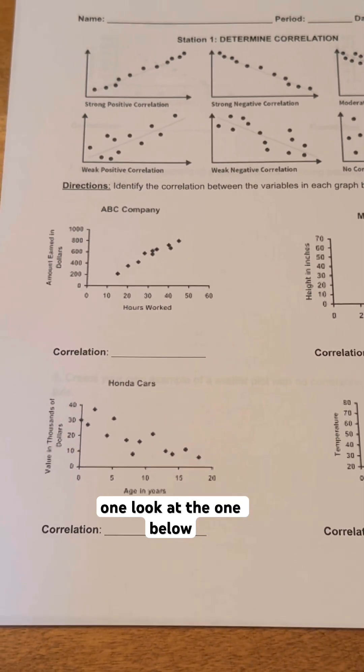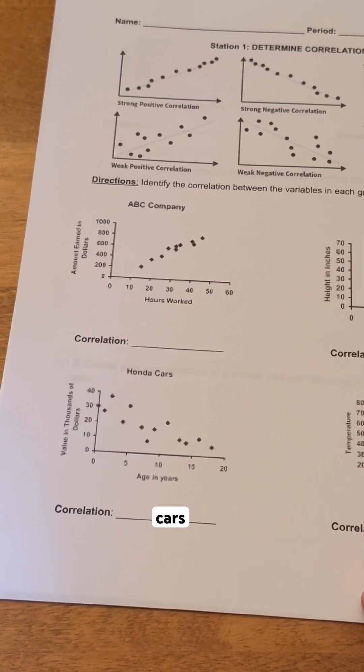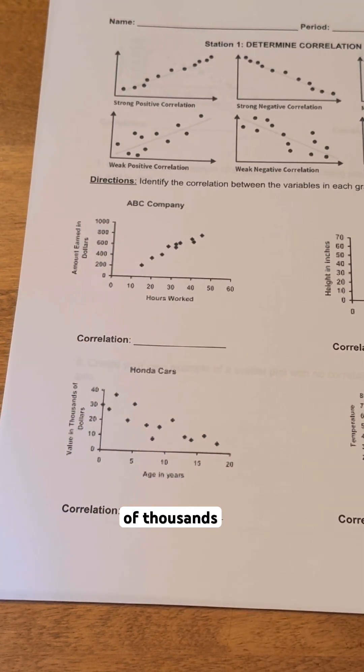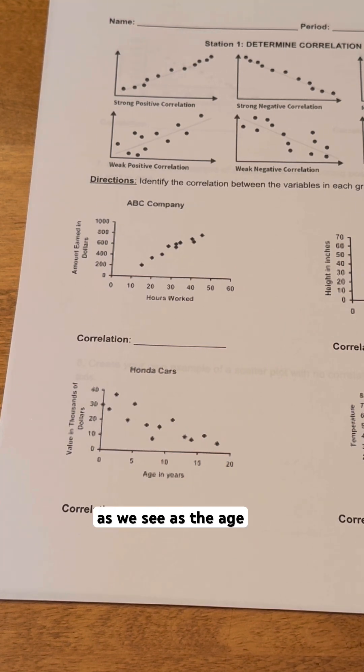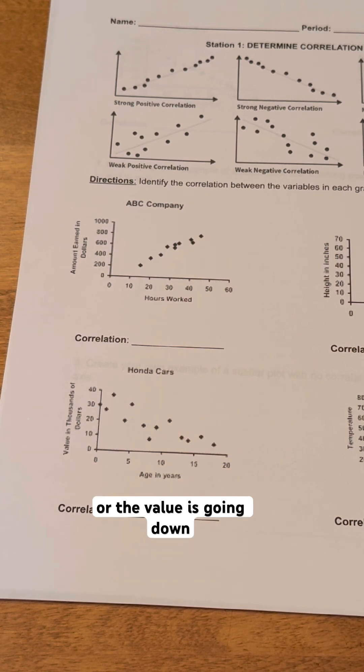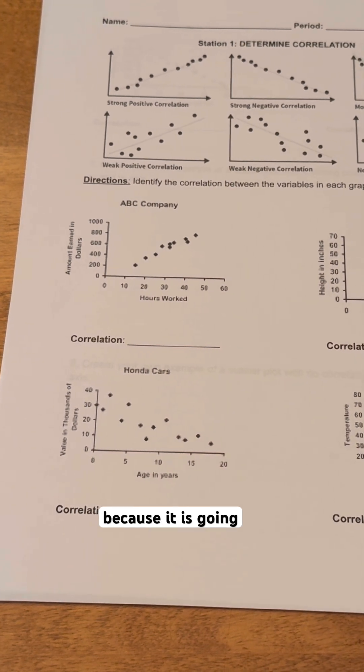And then if we take a look at the one below it, we have Honda Cars. We have the age in years and the value in thousands of dollars. As we see, as the age is going up, the price is going down or the value is going down. So that is a little bit less tightly put together, but it is a negative correlation because as one is going up,